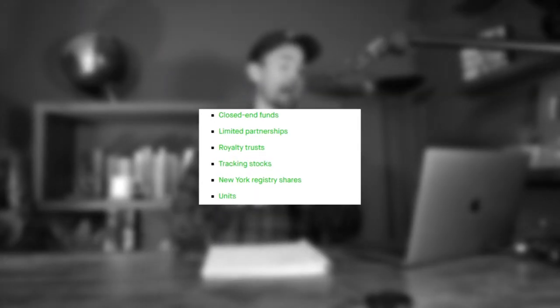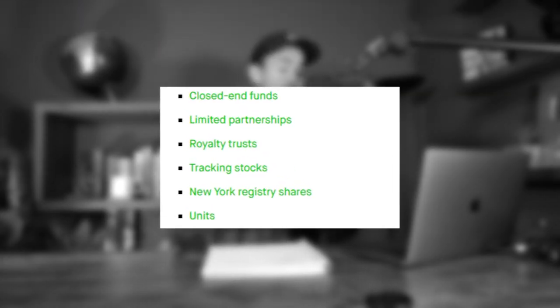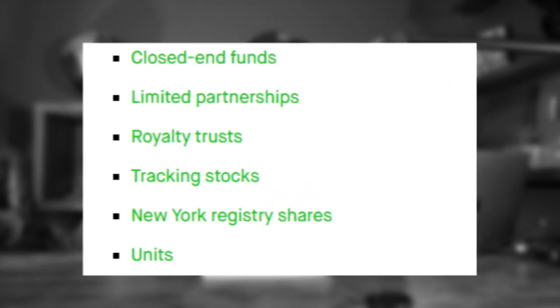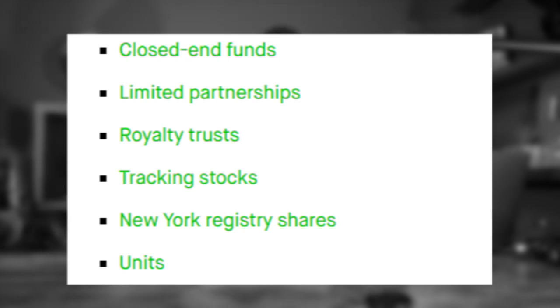You're not going to find the following on Robinhood: foreign domiciled stocks, select over-the-counter stocks — those penny stocks trading for a few cents per share — preferred stocks, mutual funds, bonds or fixed income investments directly (though you can access bond ETFs like a Vanguard bond ETF), stocks on foreign exchanges, closed-ended funds, limited partnerships, royalty trusts, tracking stocks, New York registry shares, or units. If you're looking for something on this list, you may need a more sophisticated brokerage, which may charge commissions but will have a wider variety of assets.